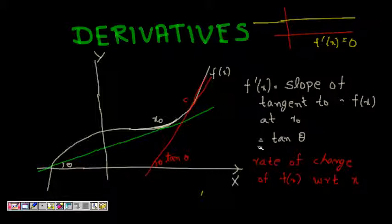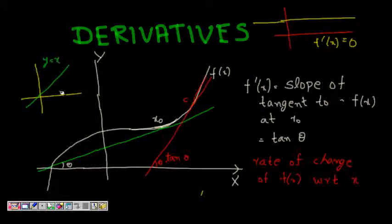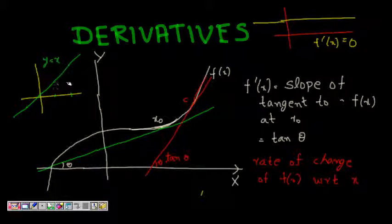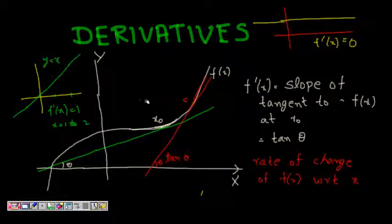Now consider a straight line — y = x. This function is changing; it is always increasing. But the increase is constant. We know that f'(x) for this is 1, meaning it is changing constantly and that rate is independent of where on the graph we are — from x = 1 to 2, or from 100 to 200, it changes at the same constant rate. So f'(x) = 1.